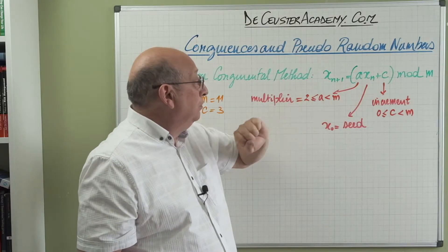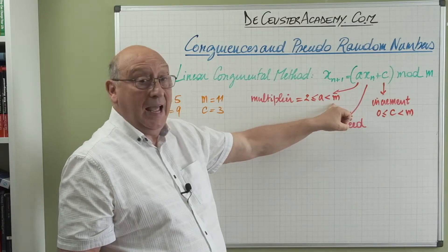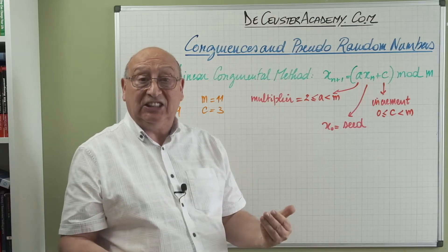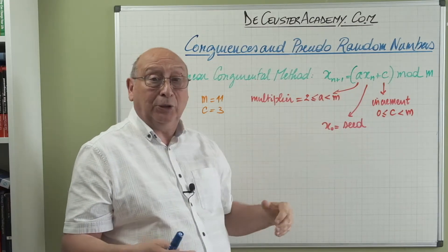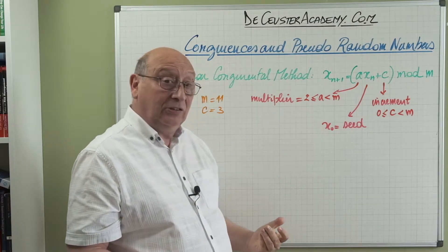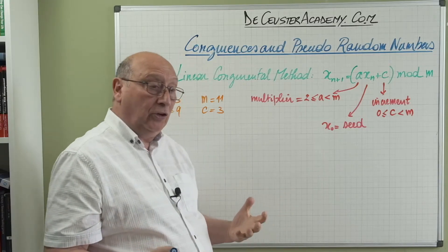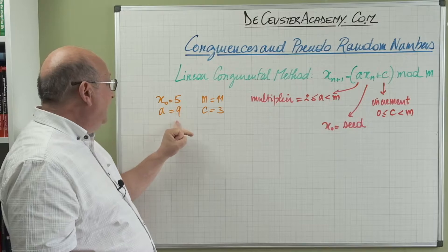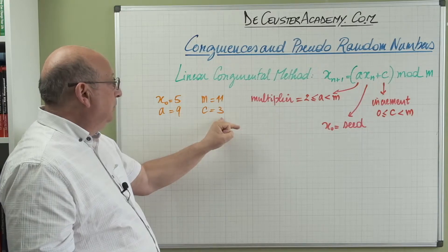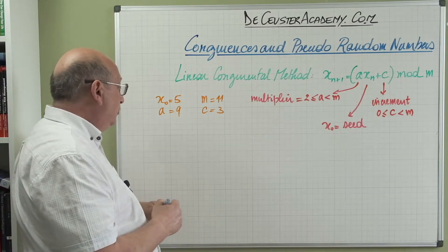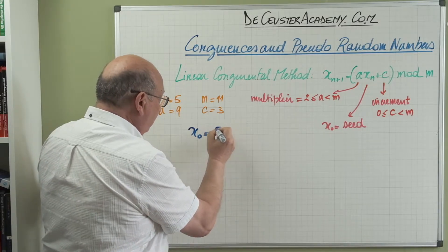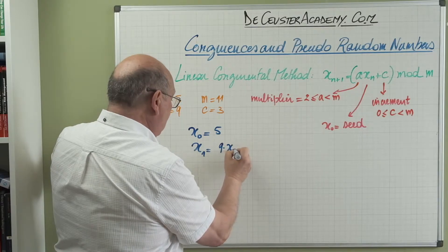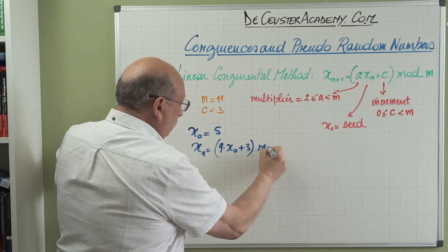In this equation, 'a' is the multiplier, between 2 and m. x_n is determined by iterations starting from x_0, which is called the seed. 'c' is the increment, also between 0 and m. For our example: seed x_0 = 5, multiplier a = 9, modulus m = 11, increment c = 3. So x_1 = (9 × x_0 + 3) modulus 11.